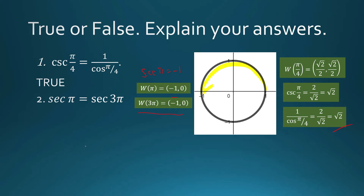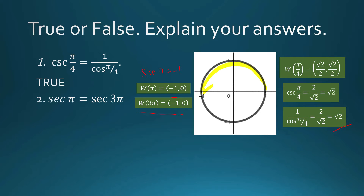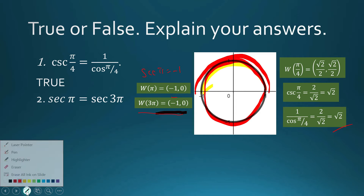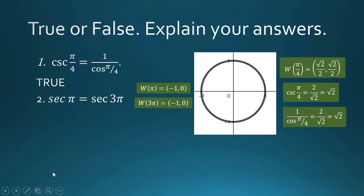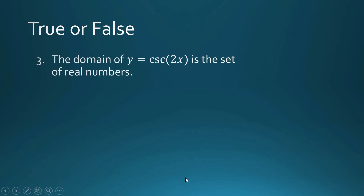For 3π, we trace an angle of 3π — that is one full revolution plus an extra semicircle — and we land on the same terminal point with the same coordinates. So sec(3π) is also −1. Therefore sec(π) = sec(3π) is TRUE.